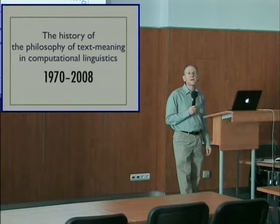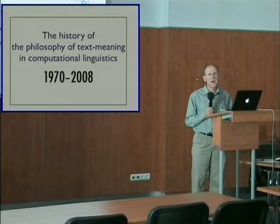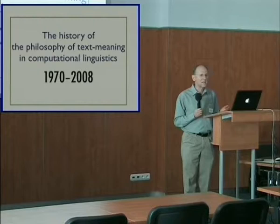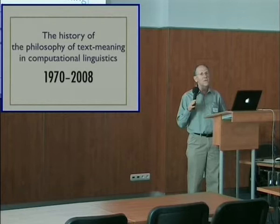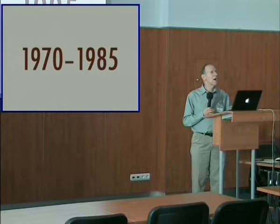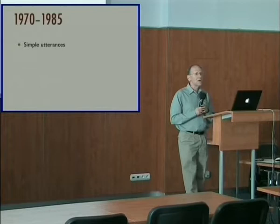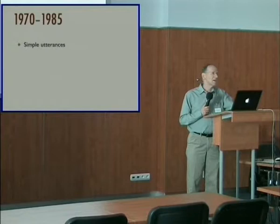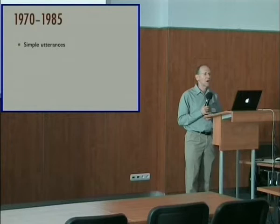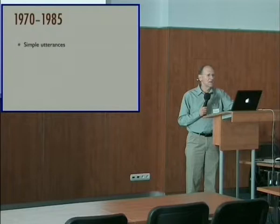Here then is the history of the philosophy of text-meaning in computational linguistics over the last nearly 40 years, divided into three eras. What I'm going to say about each era will, of course, be a generalization — it's easy to think of exceptions and counterexamples — but I think the overall trends are clear. The first era is from the dawn of computational linguistics, which is about 1970, until around the mid-1980s, plus or minus. In this era, computational linguistics focused on very simple utterances — text was usually just a single sentence, or at most a short paragraph or two of syntactically simple sentences, often on the topic of eating in restaurants, mostly concerning the research of Roger Schank.